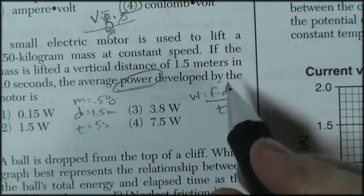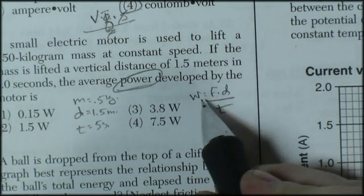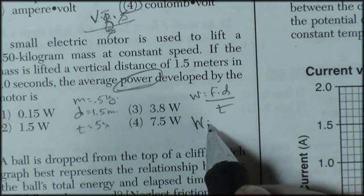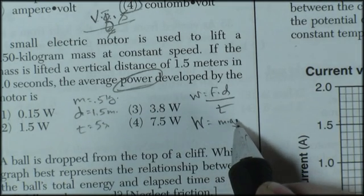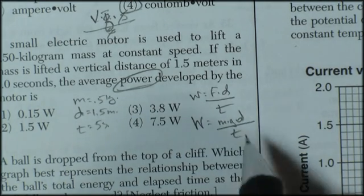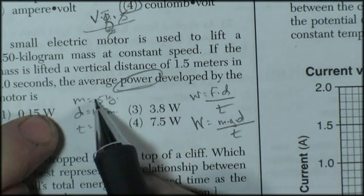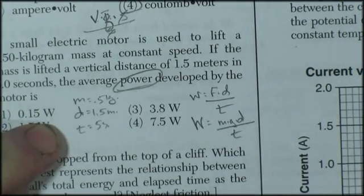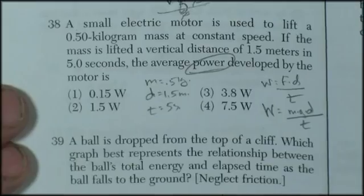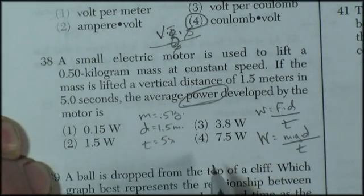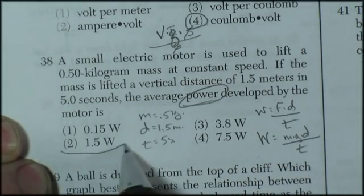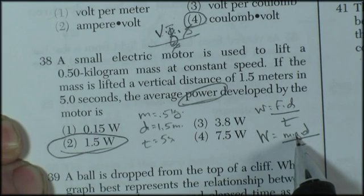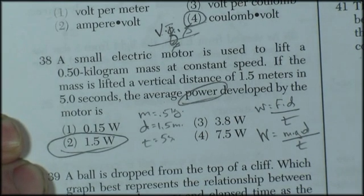So work is force times distance over time. And when I'm lifting something, the force has got to be the weight of the object. So work is equal to m times g times d divided by t. I've got m, I know g, I've got d, and I've got t. So I work out my numbers and I come up with an answer. I get 1.47, which is about 1.5. Typically on these, instead of 9.8, you can substitute in 10 and that'll work.